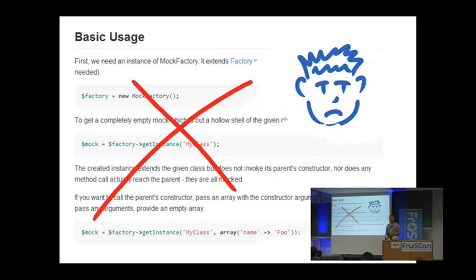Anybody ever had the problem of outdated documentation? Somebody pointed out to me: 'Thank you for doing this nice basic usage, but actually it's a parsing error — this method doesn't exist.' And I was like, 'Oh, that sucks.' So I started thinking about what you can do, and I had an idea. This is where this all started.